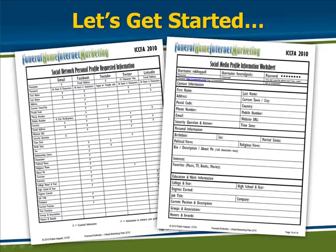Let's get started. Please review and fill out the handouts that you have. The first one is the social network personal profile requested information form, which tells you all the information that these five profiles will want you to have. The social media profile information worksheet is a handy place to jot down all your information, because you're going to need it time and time again as you're creating these various profiles. Make sure you review these documents, fill them out, and you'll be ready to get started.